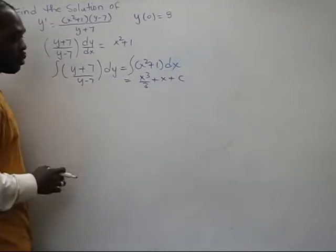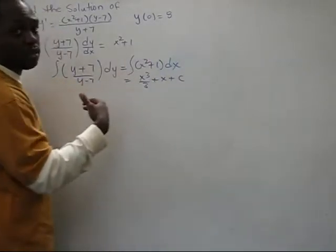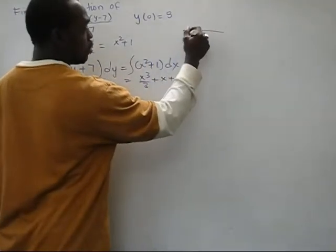And this side, what I'm going to do is polynomial division, because I have Y on top of Y minus 7. So I'm going to do one division.